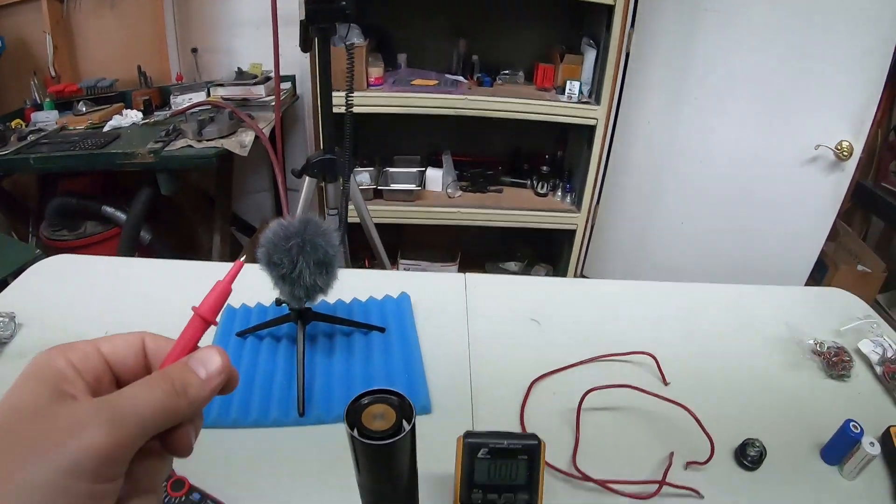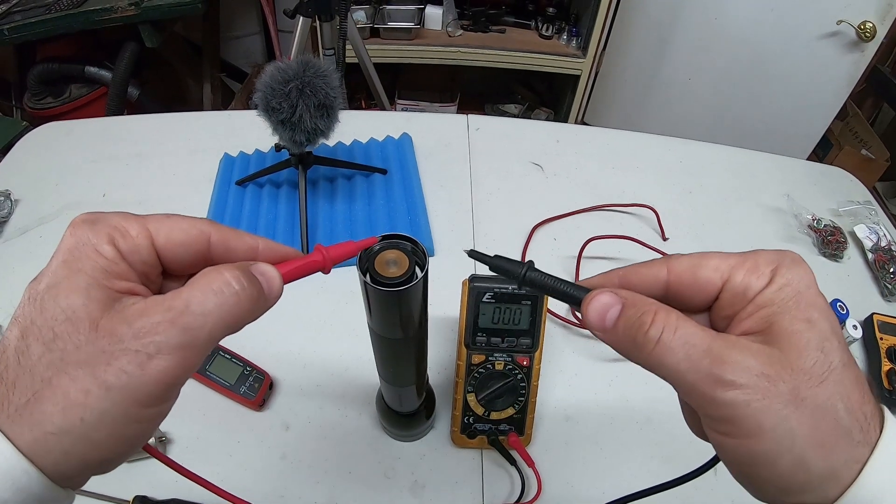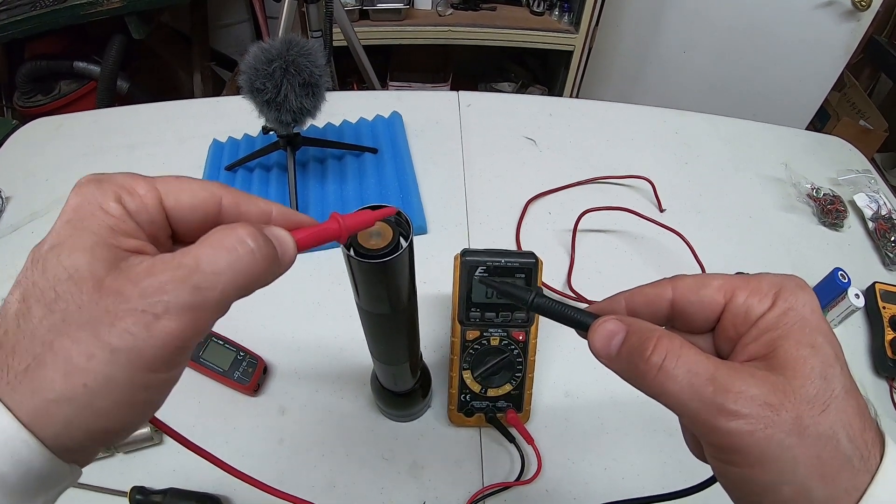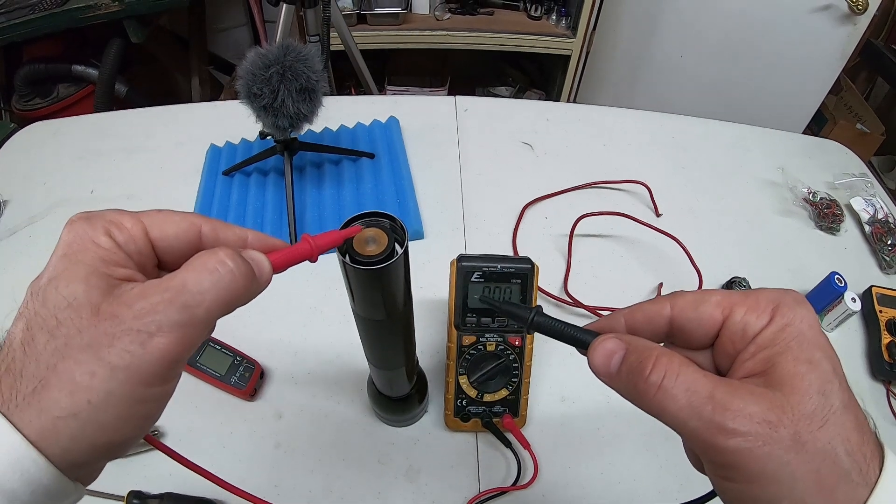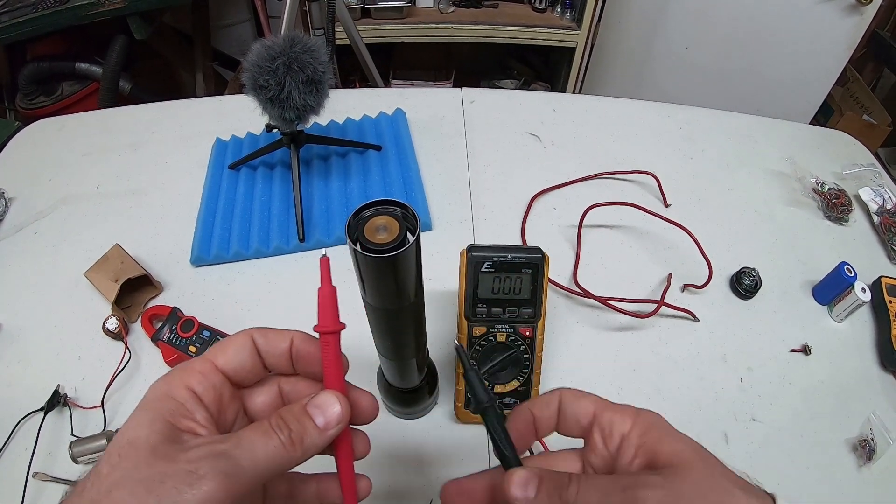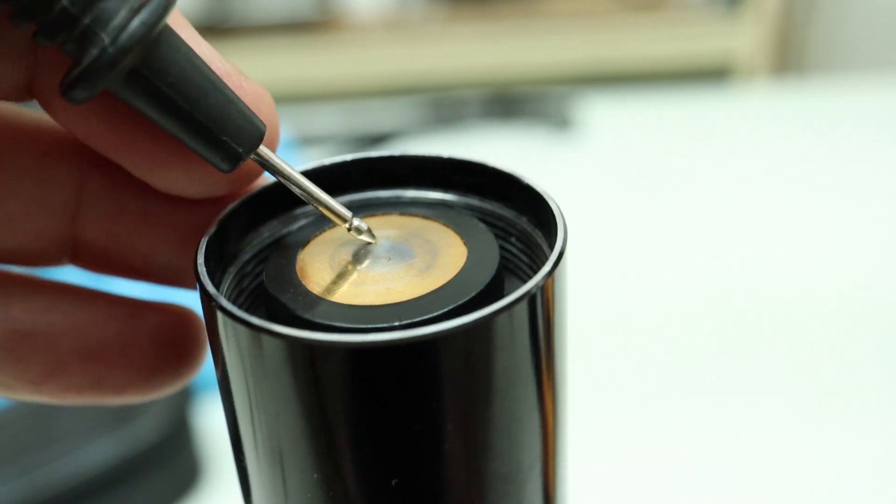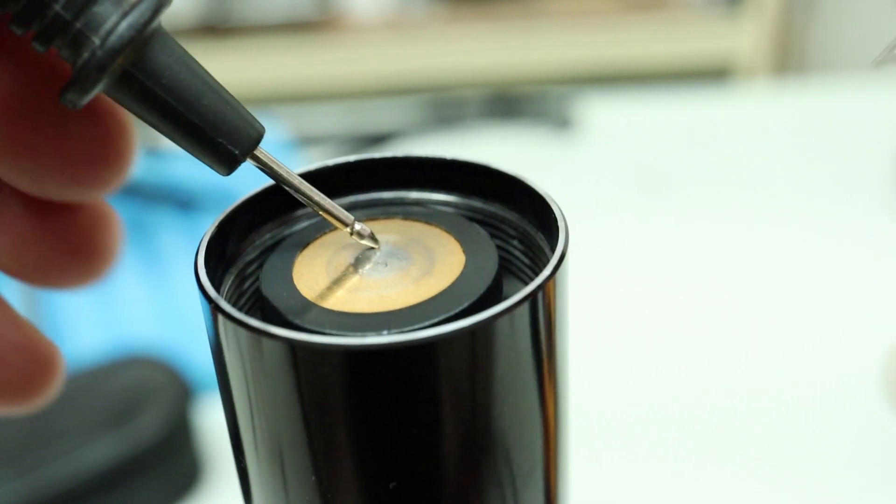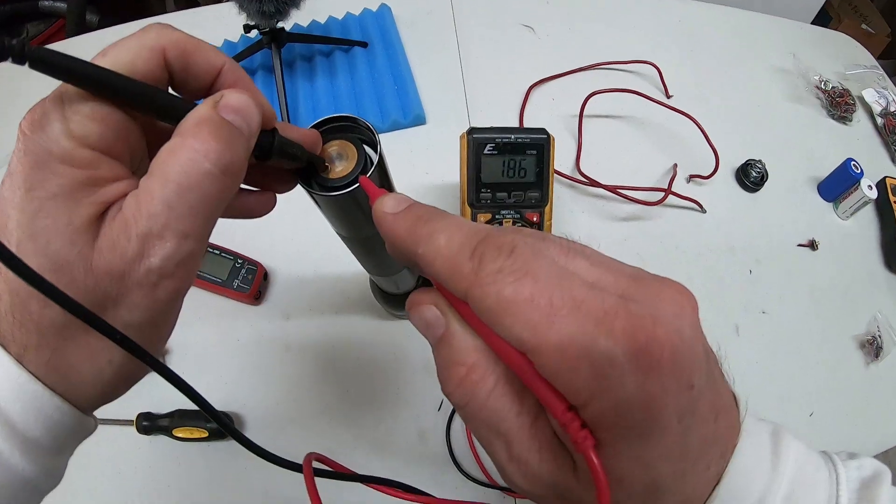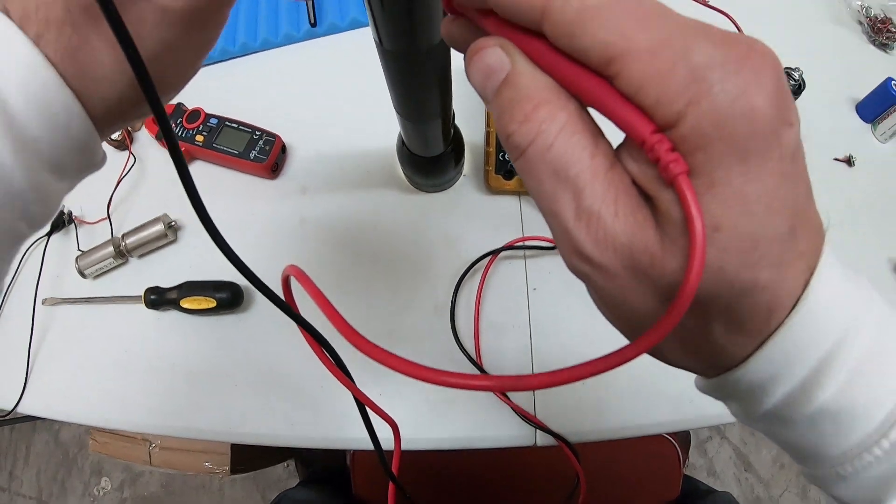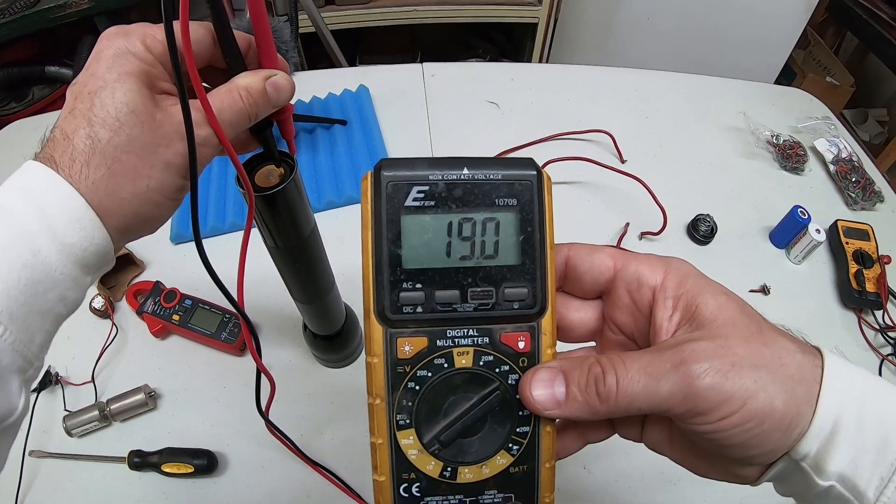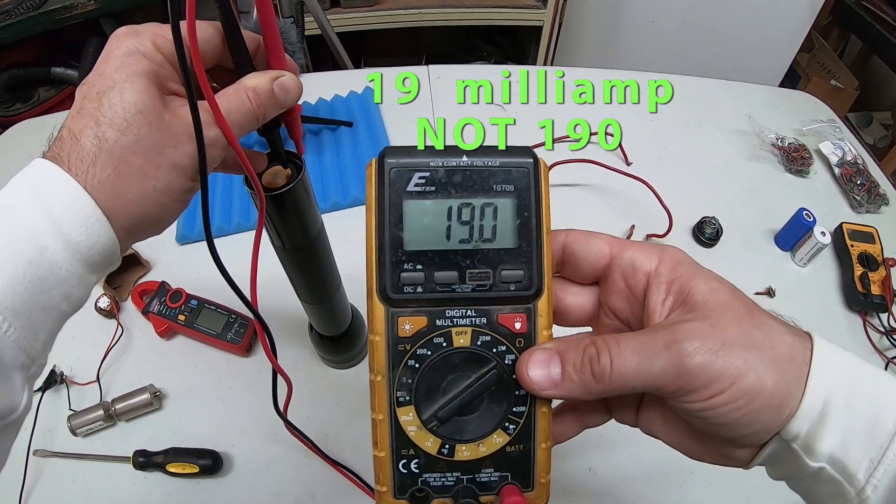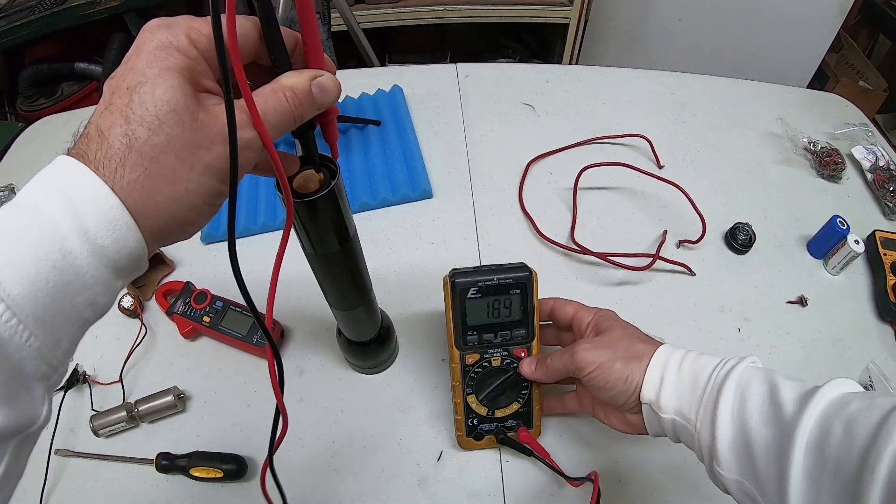And all we need to do is instead of putting the tail cap on normally, the tail cap completes this circuit, it runs from here to here. We're just going to complete that circuit using the multimeter leads. We're going to put one right here on this and one right there. And it's hard to see but the light does power on, and we're getting 190 milliamps on that low power.